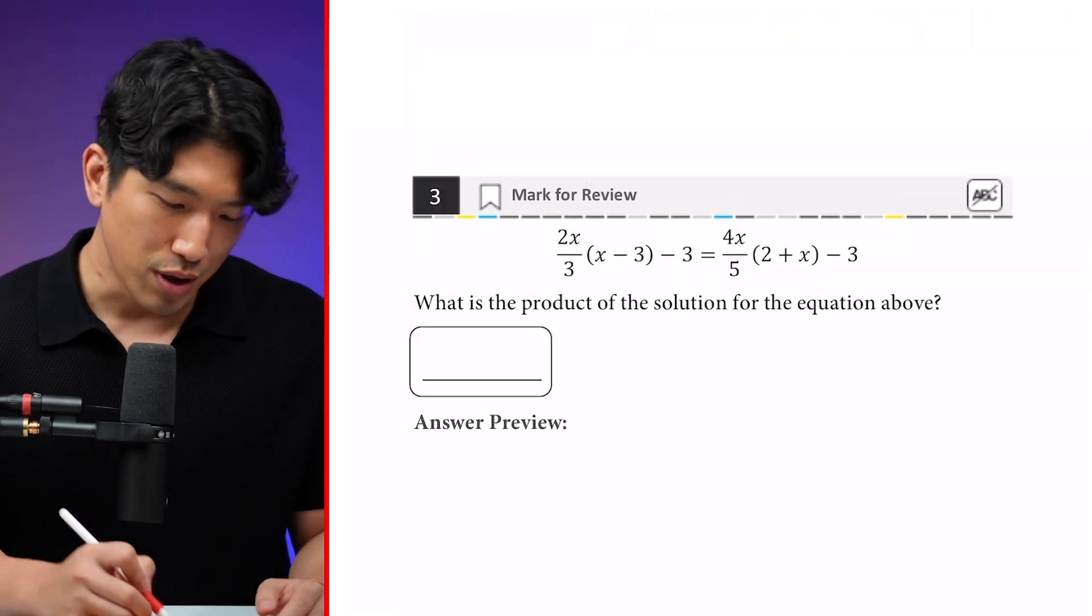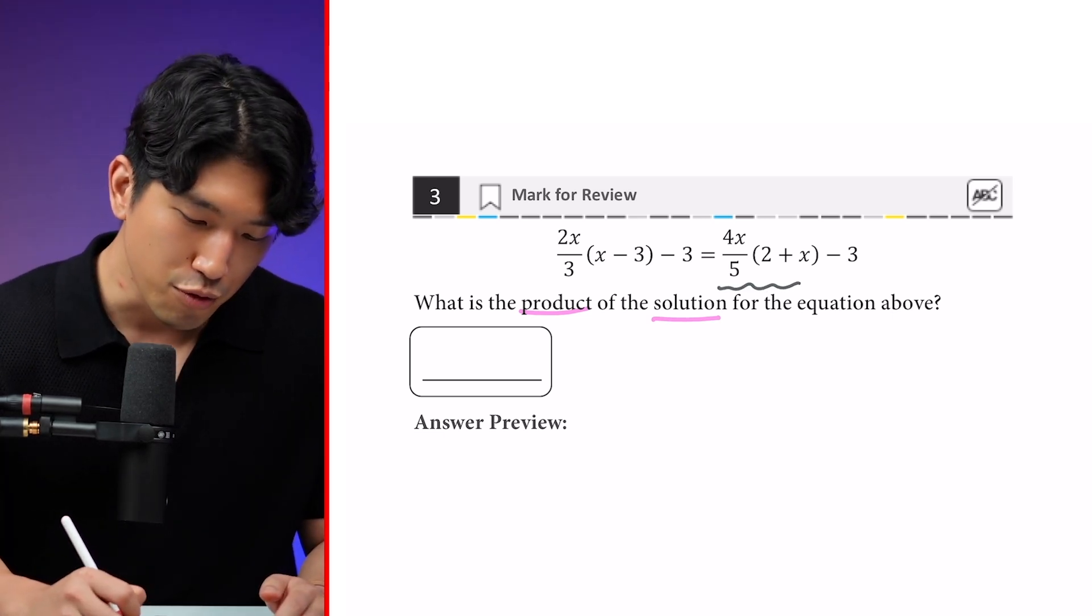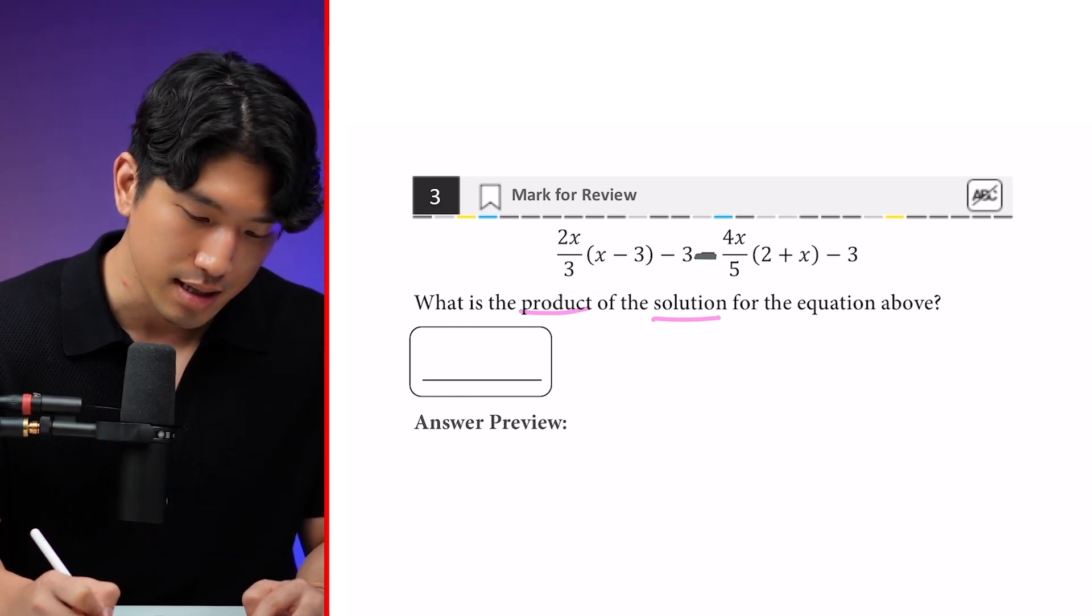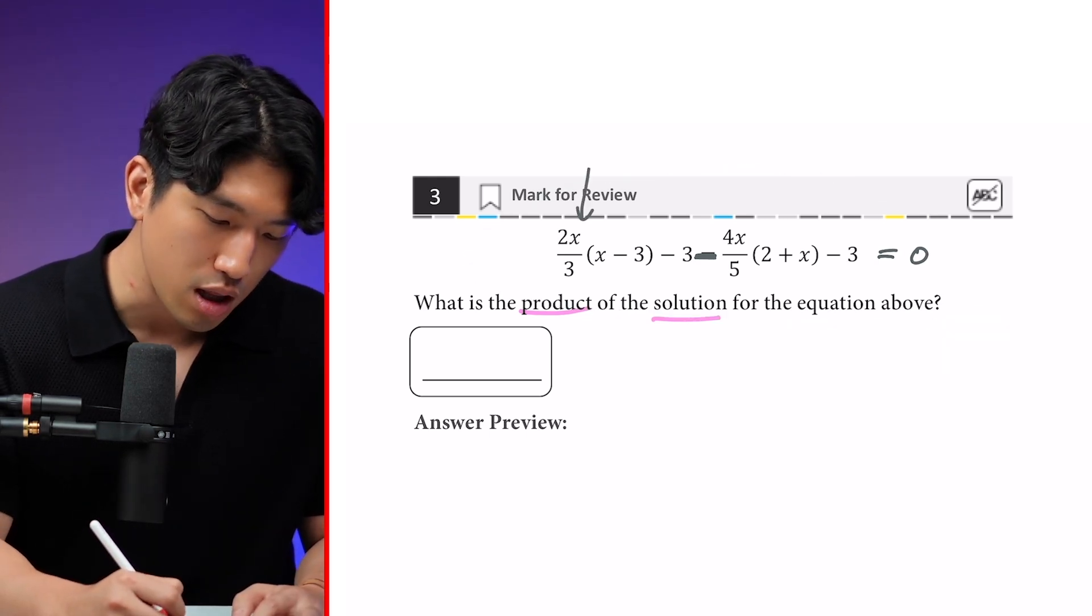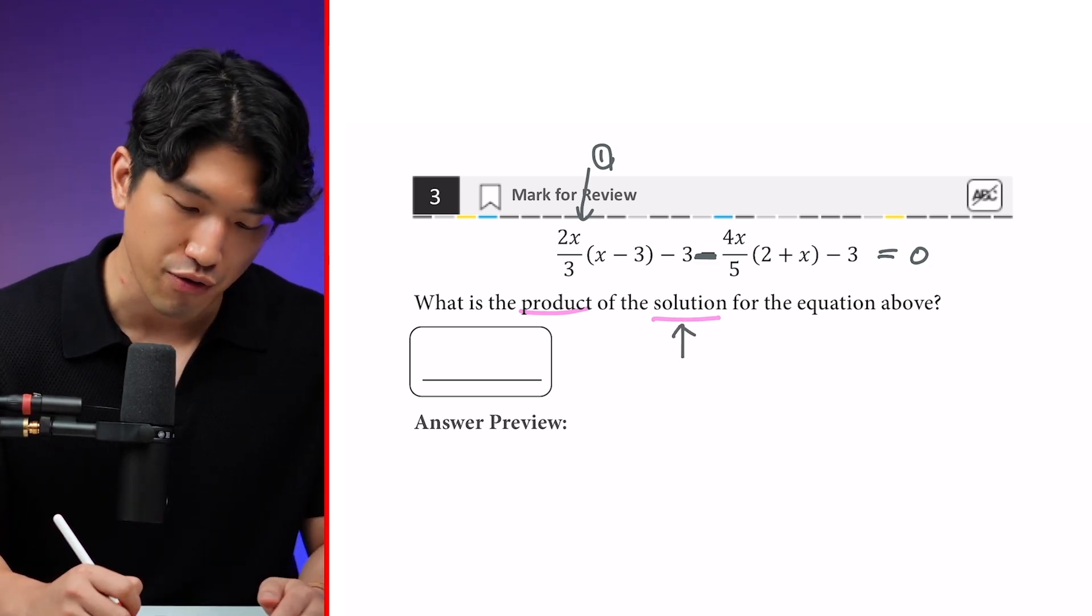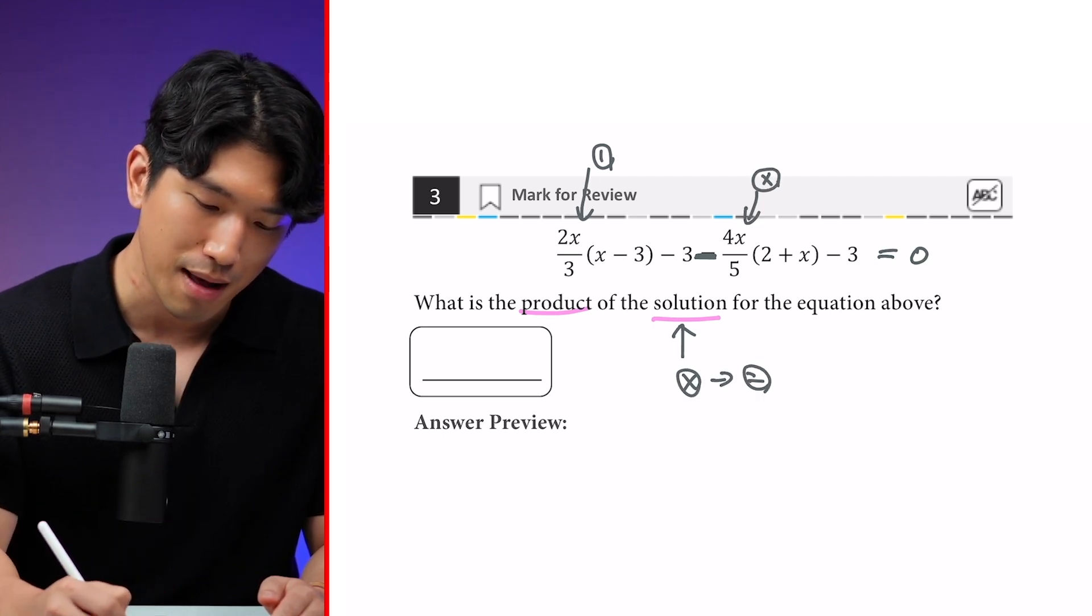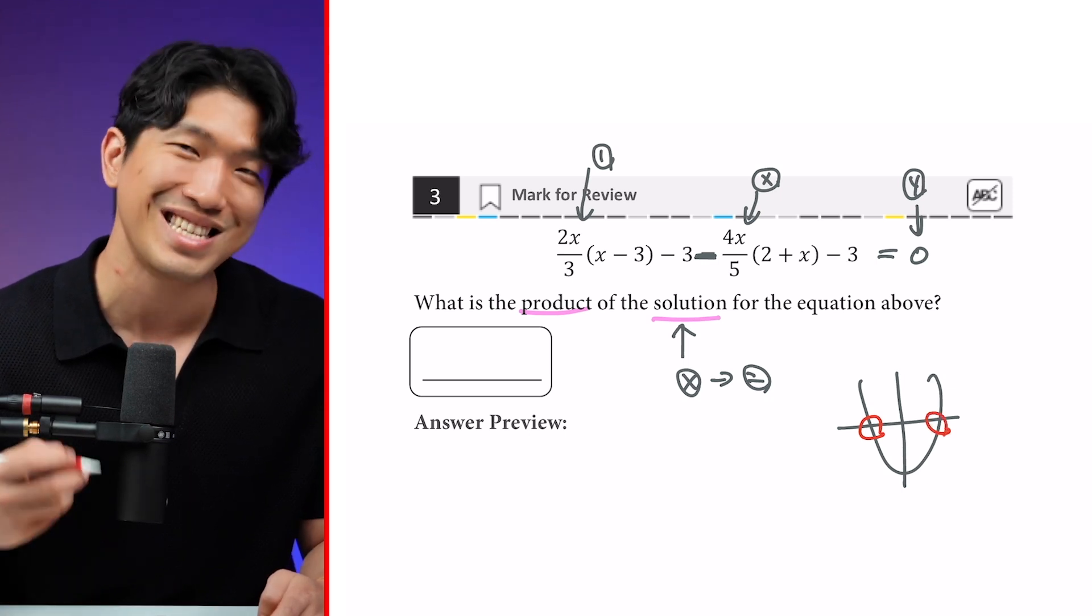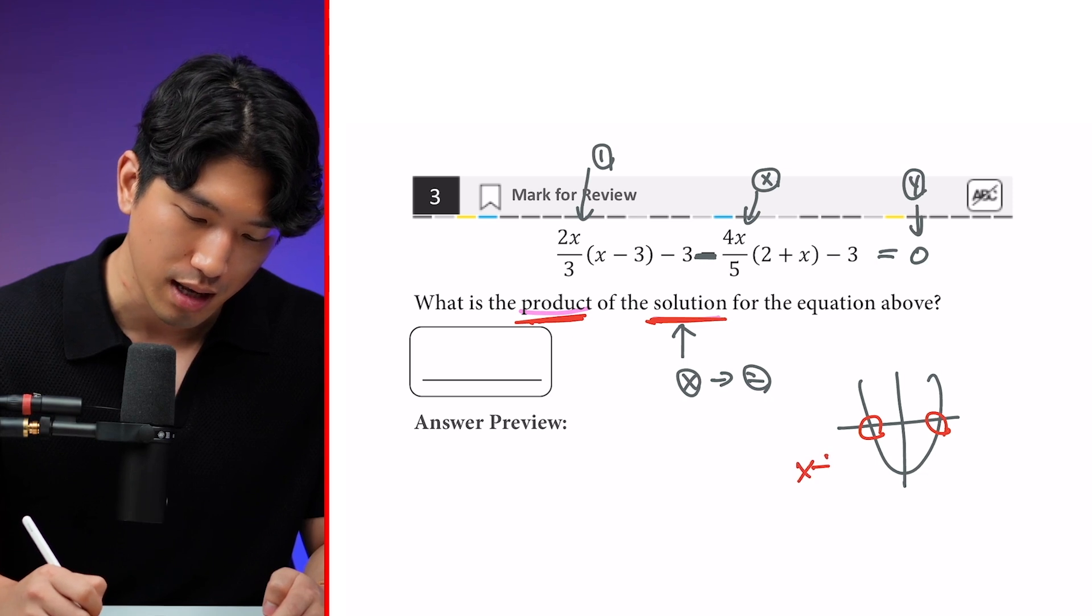Let's try another question. So the question says, what is the product of the solution for the equation shown above? So for this one, if you move the right side to the other side by subtracting it, you're going to end up with this minus this is equal to zero. And now what do we have? We have one equation with one unknown variable. And we're looking for solutions to this equation. So we're looking for the product of the solutions or the product of the x-intercepts.